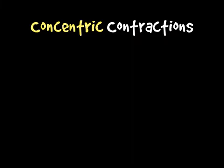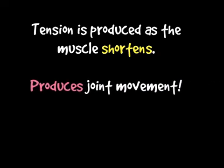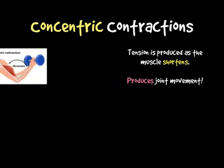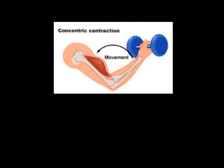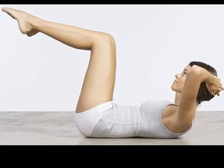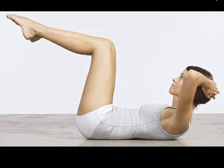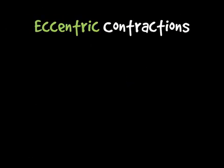Starting with concentric: this happens when a muscle shortens — that's the key thing to remember. Generally, if you flex a muscle, that is a concentric contraction, and it produces joint movement. A good example is a bicep curl: as you move your fist towards your shoulder, that is a concentric contraction — you are flexing your bicep. A further example is a sit-up: as you go up to do the crunch, your rectus abdominis shortens — you can see it in the picture — and that is a concentric contraction.